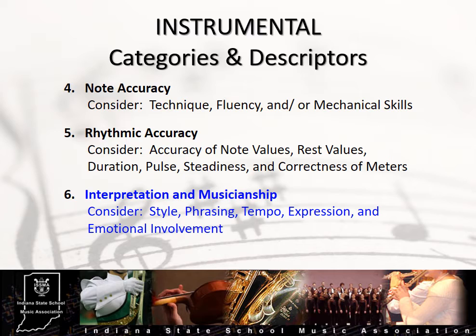Interpretation and musicianship, Category 6, encompasses a great many elements of performance. It may also be one of the most difficult categories to evaluate while remaining objective and unbiased. When evaluating this category, consider not only if the ensemble is playing what is on the page, but also if they are taking the music to a higher level of understanding and performance. Let's examine the descriptors in this category more closely.